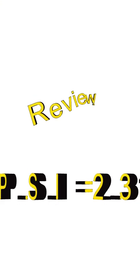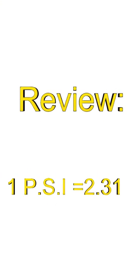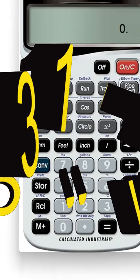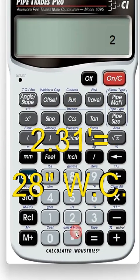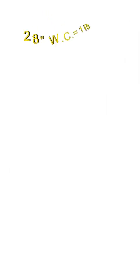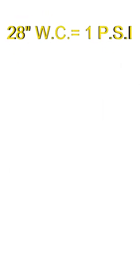So let's recap what we just covered. One psi will push water 2.31 feet. 2.31 feet is equivalent to 28 inches of water column. So we could say 28 inches of water column equals 1 psi.